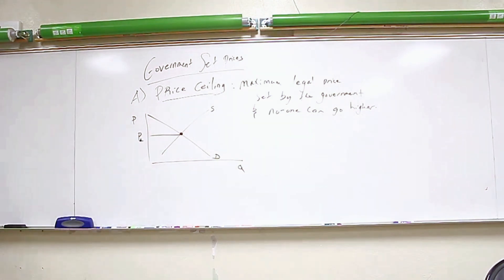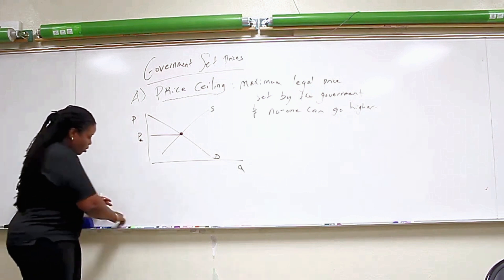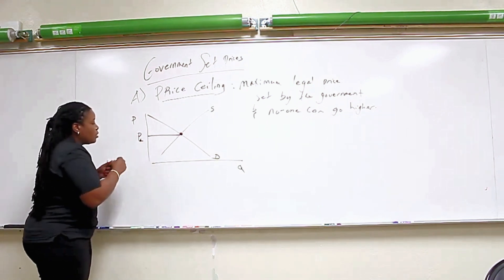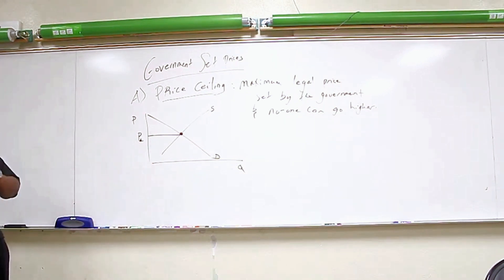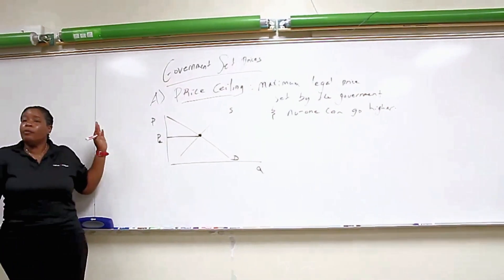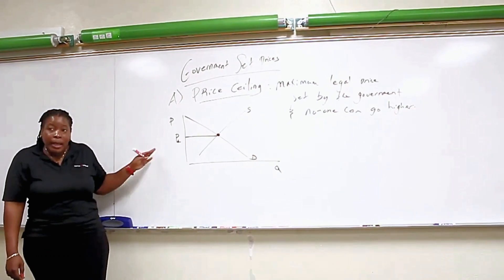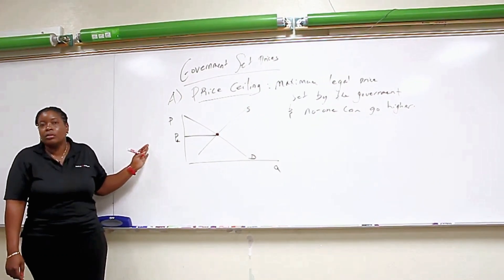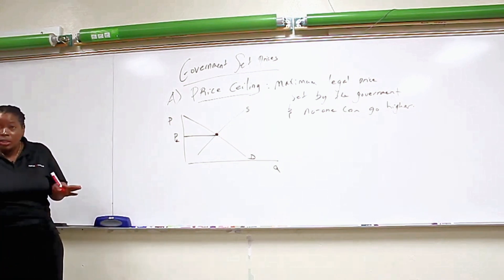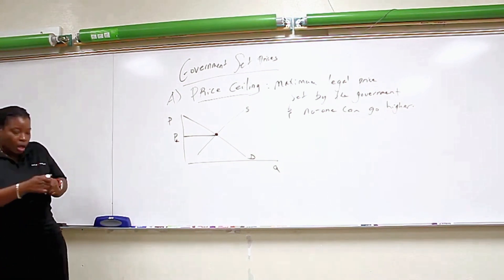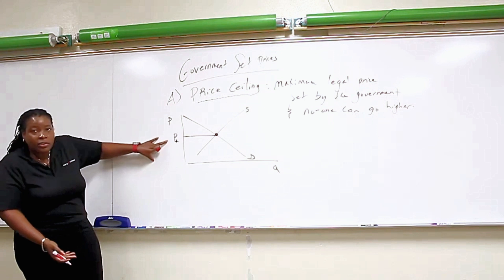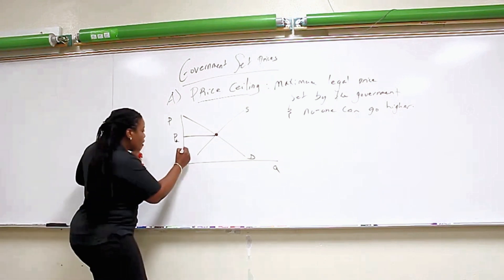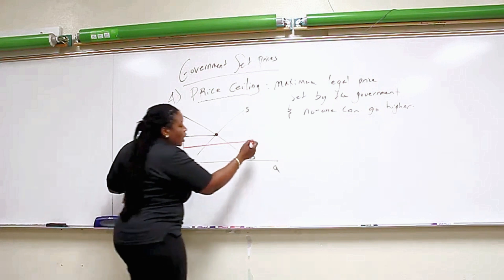With a price ceiling, the government looks at this and they go, you know what? I don't like P star. They look at this and go, P star as a price is too high. I don't think it's fair that consumers have to pay P star for this good or service. So what they do is they go in, they intervene, they pass a law and they put a price in place to help the consumer. They say this price is too high so I'm going to set the price and let's call it P ceiling.